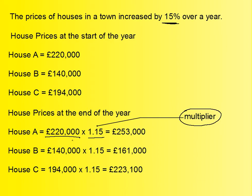Now why is that? Well, we know that when you multiply any number by 1, you get the number itself, and so this part of the multiplier ensures that we get our original value back. And then when you multiply it by the percentage as a decimal, it will then give you the final value, which in this case is £253,000.